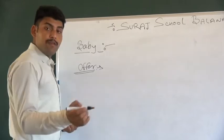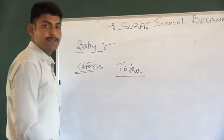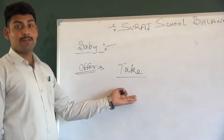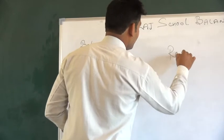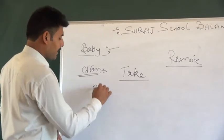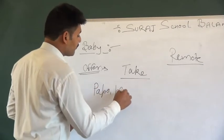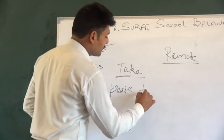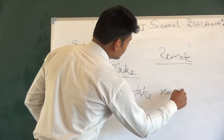Very simple — for offer, again we have one key word. We will use 'take.' For demand we use 'give,' for offer we use 'take.' What do you want to offer? Remote. If Papa is being offered a remote, then since Papa is a respectable person, we say: Papa, please take remote.